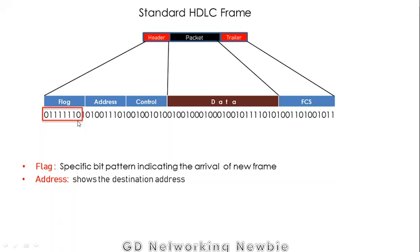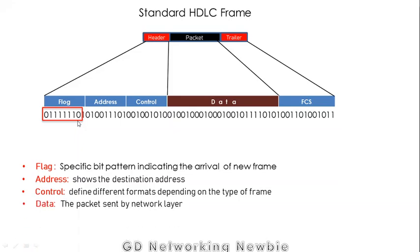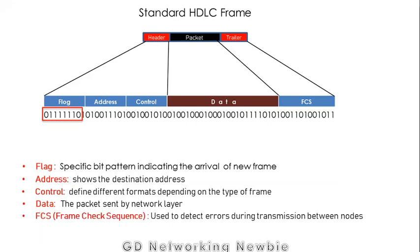The address field shows the destination address for our data. The control field defines different frame formats depending on the type of frame being sent. We also have the data field, which carries the network layer data. Finally, FCS — Frame Check Sequence — is used to detect errors during transmission between nodes, for example between router R1 and router R2.